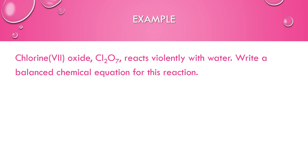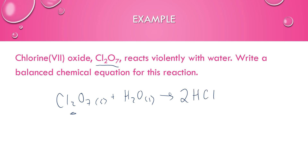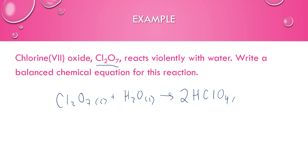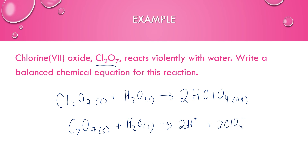Chlorine 7 oxide, Cl₂O₇, reacts violently with water — write a balanced chemical equation for this reaction. This is a non-metal oxide, so it will definitely form an acid. Cl₂O₇ (solid) reacts with water to form two molecules of HClO₄ — perchloric acid, which is a strong acid. This balances with two hydrogens, two chlorines, and eight oxygens total. The net ionic equation can then be written by splitting into two hydrogen ions and two perchlorate ions. Always remember: non-metal oxides form acids.